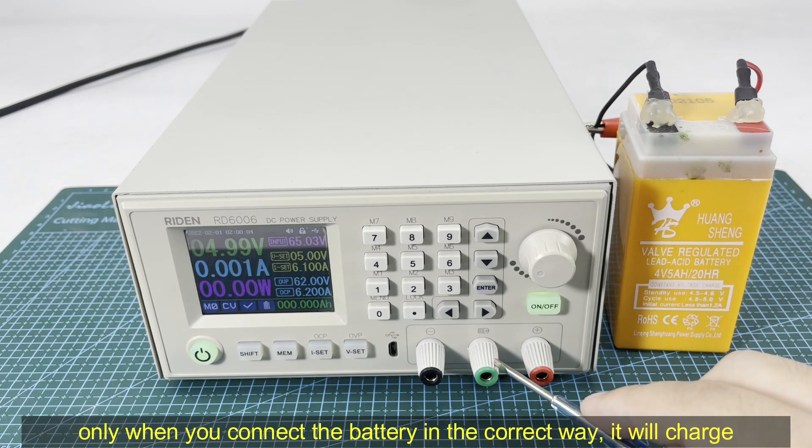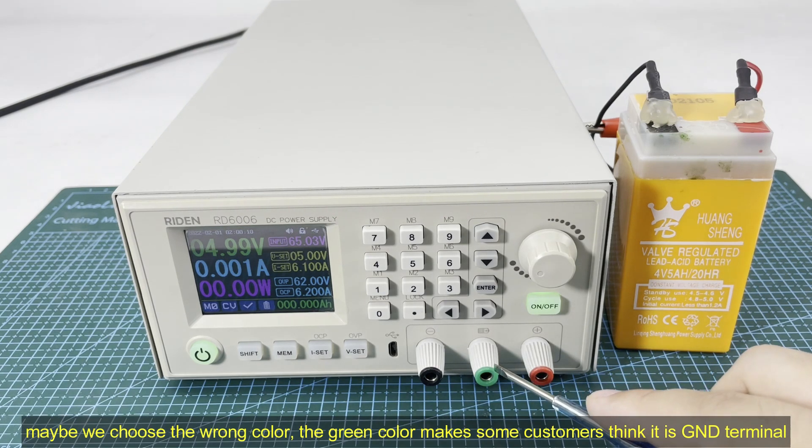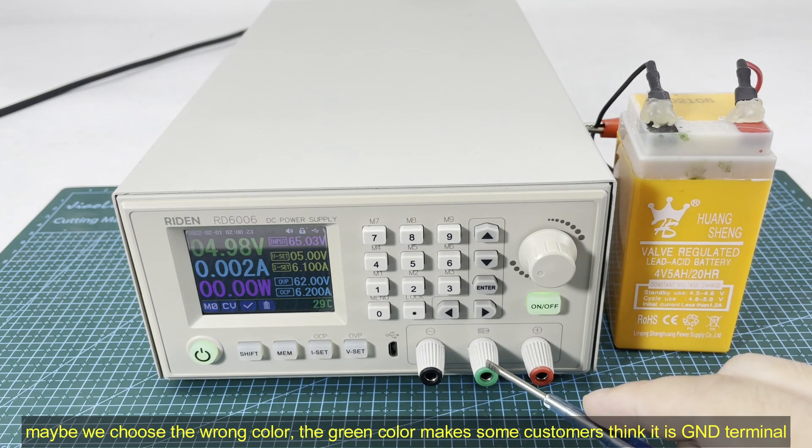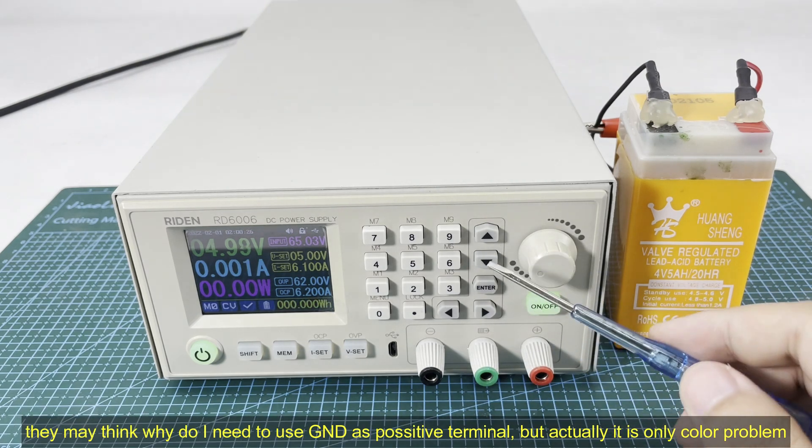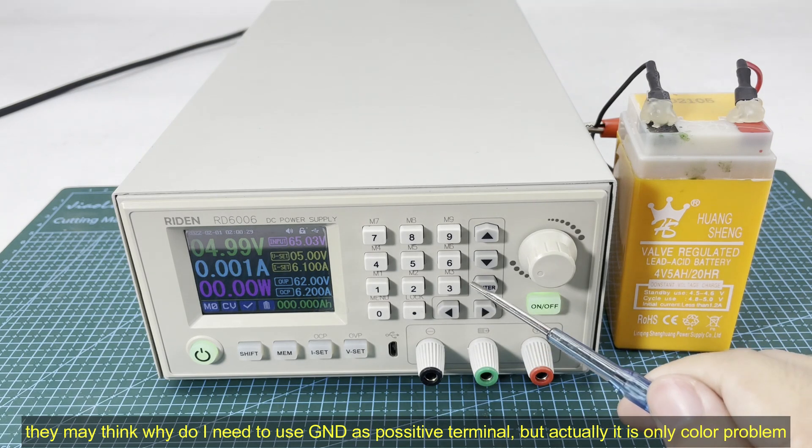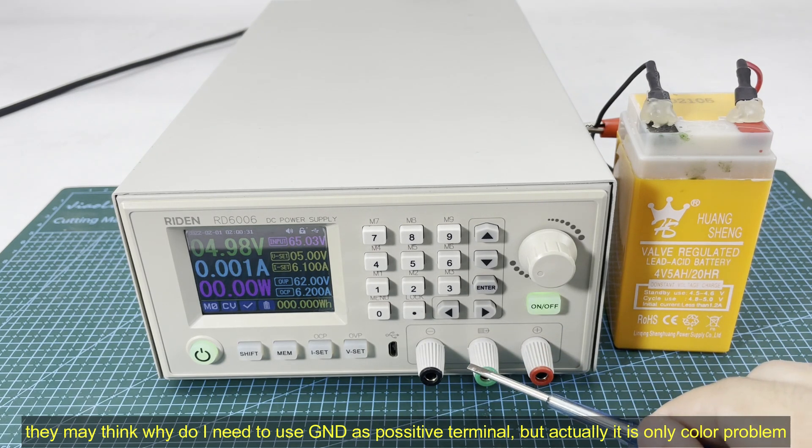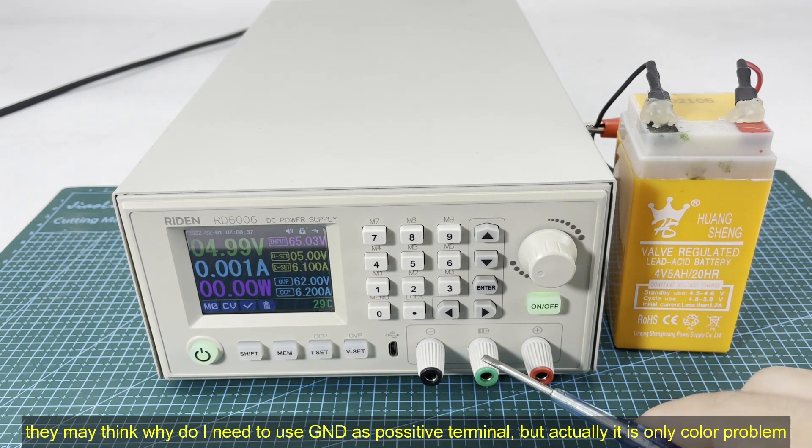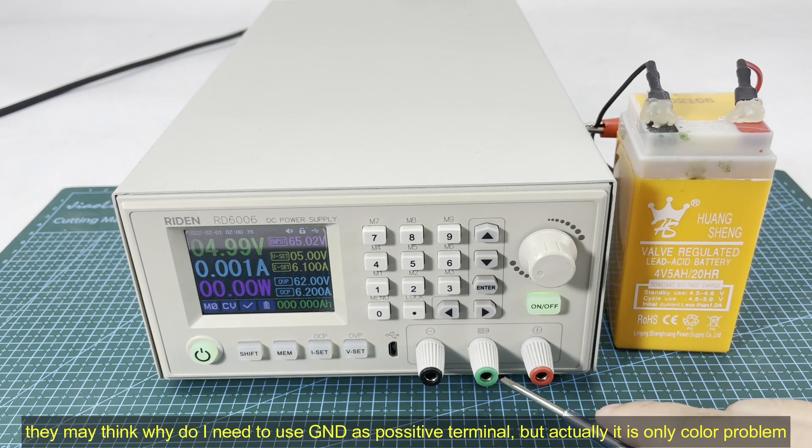Maybe we chose the wrong color for the battery charging positive terminal. It is green, so some customers may think that it is a ground terminal, so they may be confused why they need to use a ground terminal as positive terminal of the battery. Actually it is not a ground terminal, it is just that maybe the green color makes you confused.